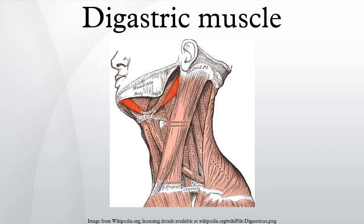The digastric muscles are present in a variety of animals, and specific attachment sites may vary. For example, in the orangutan, the posterior digastric attaches to the mandible rather than the hyoid.